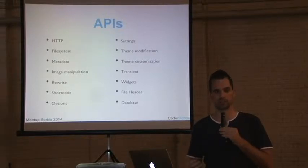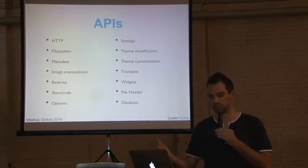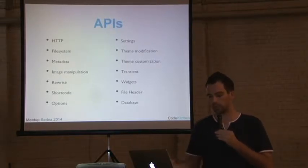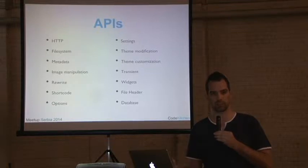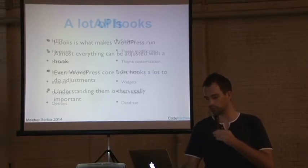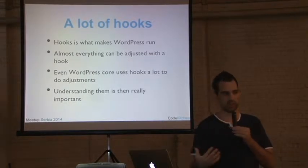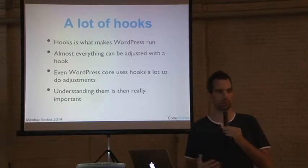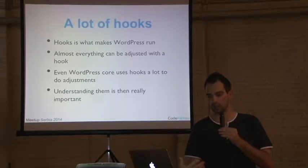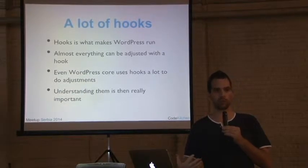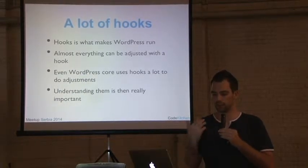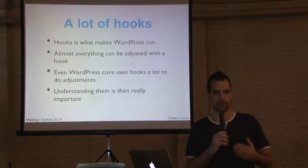Obviously hosting companies should have curl installed, but you can't rely on that. WordPress has many other API functions that work out of the box. We also have a lot of hooks — roughly 2,000 hooks in WordPress alone. They make WordPress run; they're why we can build plugins and themes. Basically everything can be adjusted through those hooks.